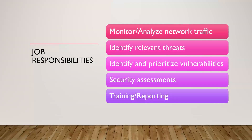You'll also be identifying and prioritizing vulnerabilities, determining whether existing security controls already protect against them or whether new controls need to be established. This involves security assessments to evaluate what controls are in place and whether they can be bypassed. Security assessments wrap in pen testing, ethical hacking, red teaming, blue teaming, and purple teaming — the overall goal being to assess the organization's defenses and get the right things in place.